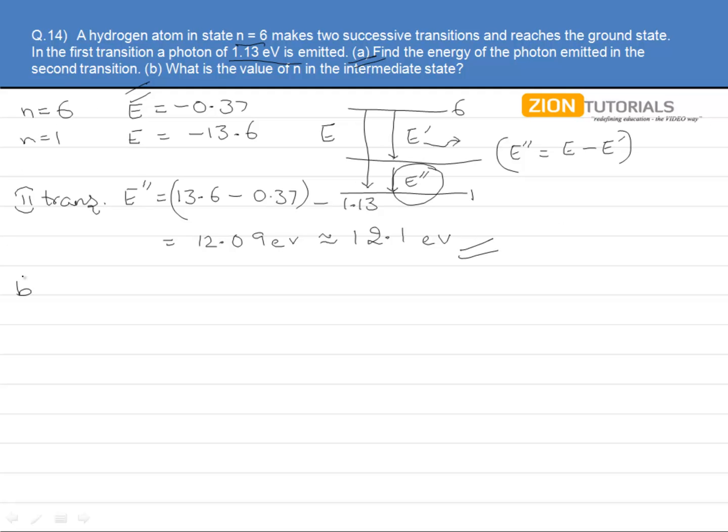Now in part B we need to find the intermediate state in which it is making the transition. Now can we find out the energy of this state? Yes we can obviously do because it is the energy of sixth orbit plus the energy of the photon emitted to come to that orbit.